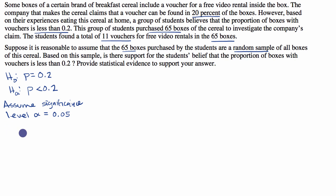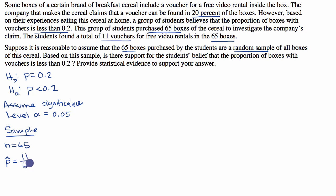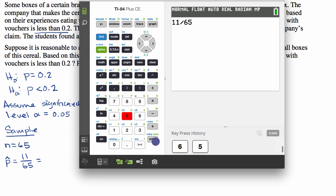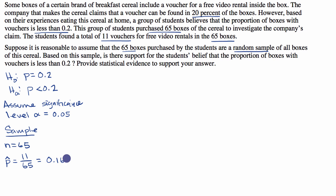Then we'll want to think about the sample. We're going to figure out, if we assume that the null hypothesis is true, what's the probability that we get the sample proportion that we do? If that is below the significance level, then we would reject the null hypothesis. We know that n is equal to 65. From that, we can calculate what the sample proportion is — it's going to be 11 out of 65. Calculators are allowed on this part of the exam. 11 divided by 65 gives us approximately 0.169.